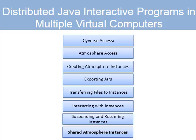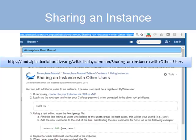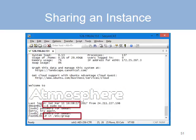One issue that arises with the scarcity of instances is how to share an instance among multiple users. You might create an instance, your fellow student might create one, and each of you might want to use not only your own instance but your friend's instance too. For shared Atmosphere instances, there's a URL that tells you exactly what to do to create a shared instance, and here I've followed those instructions.